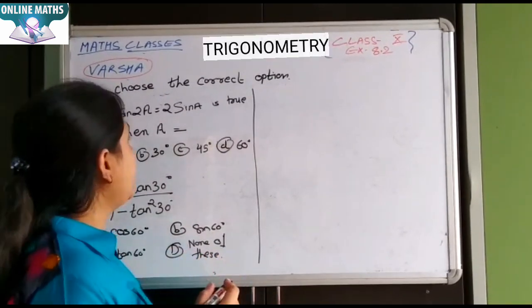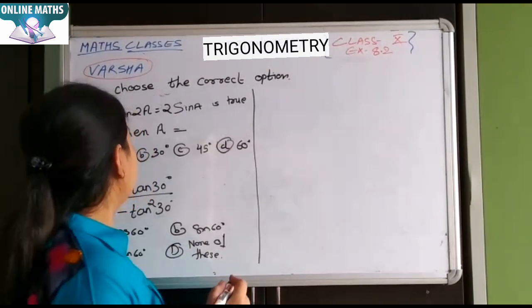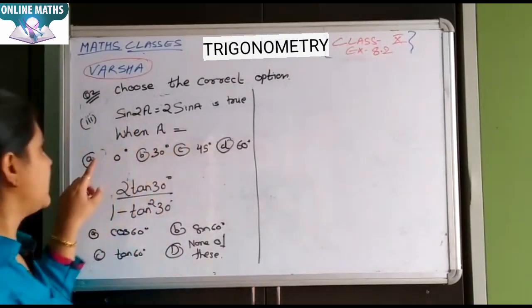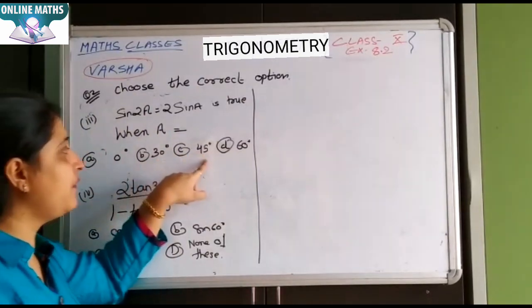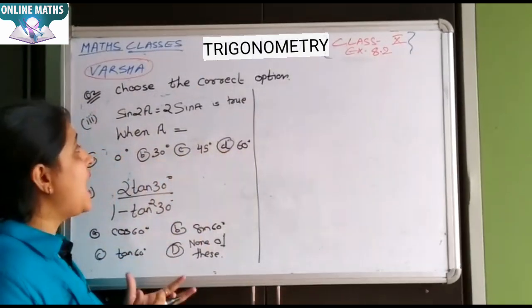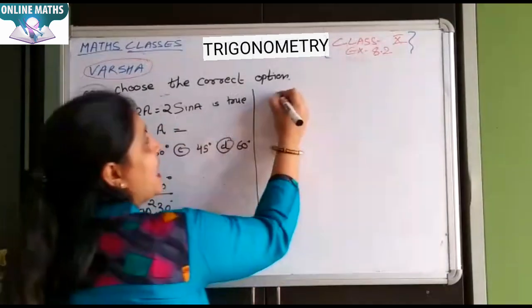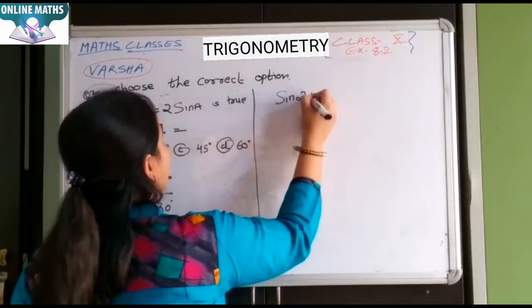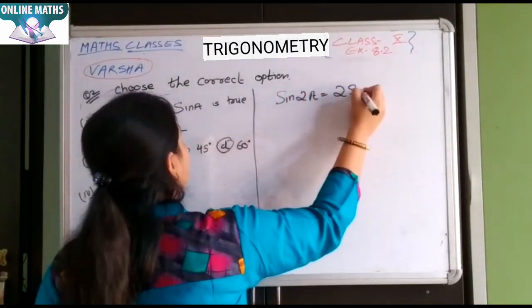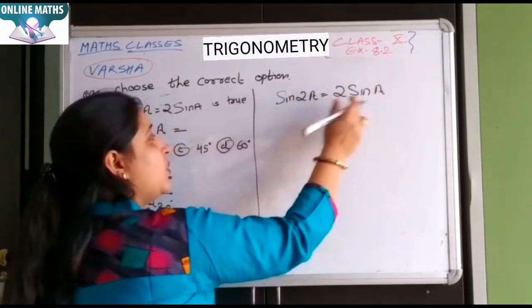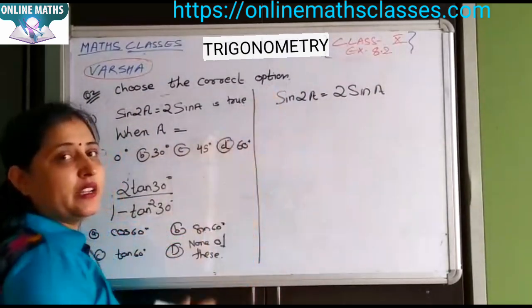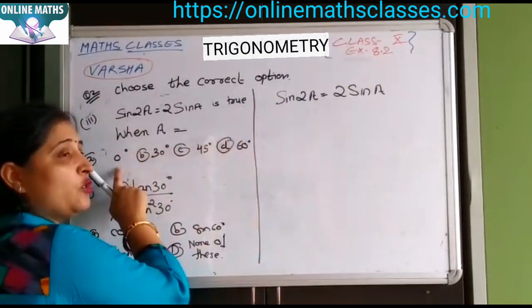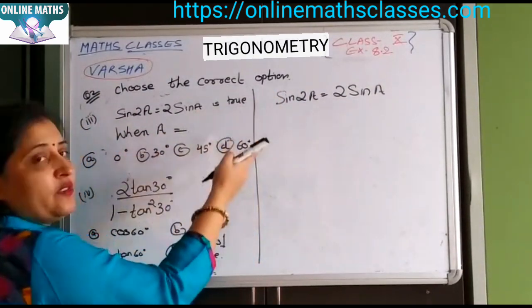Now next is sine 2A equals to 2 sine A is true. When A equals to aapka options dekhiye: 0 degree, 30 degree, 45 degree or 60 degree. Aapko ismein yeh dekhna hai ki sine 2A, 2 sine A ke kya equal, in dono ki values kya equal aayegi.